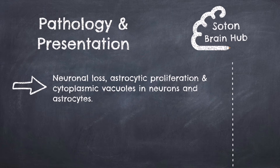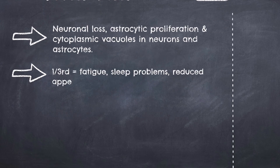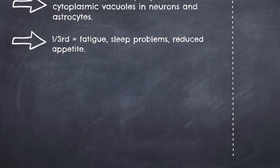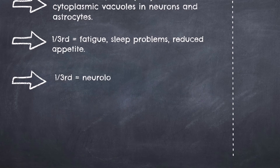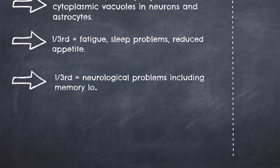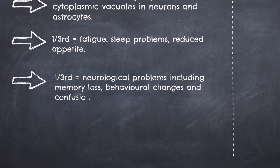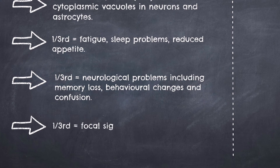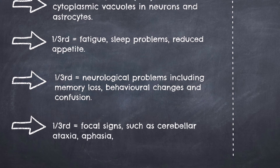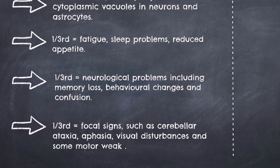The presentation of CJD is variable, but symptoms are often rapidly progressive. Approximately one third experience fatigue, sleep problems, and reduced appetite. One third have general neurological problems including memory loss or dementia, behavioural changes, and confusion. And the other one third have more focal neurological signs including cerebellar ataxia, aphasia, visual disturbances, or motor weakness.